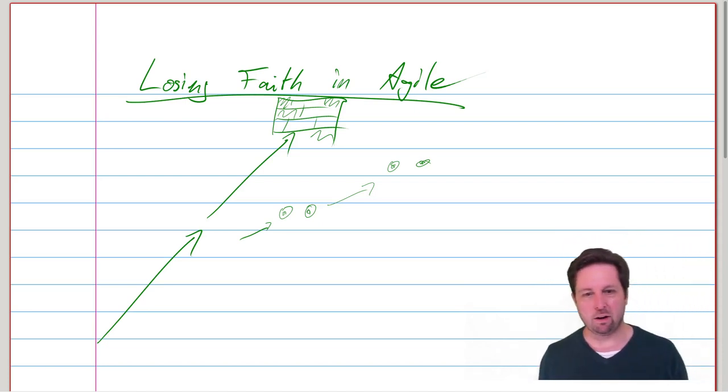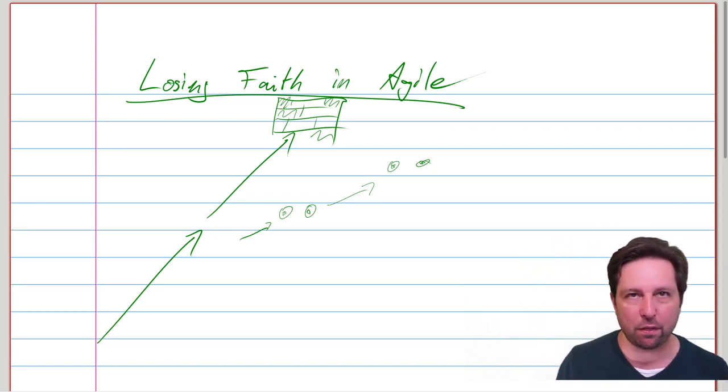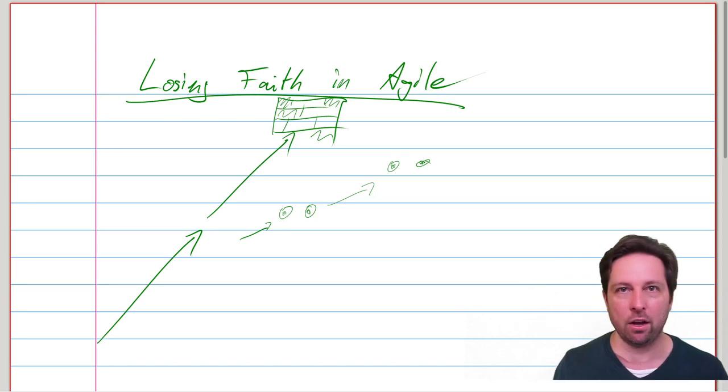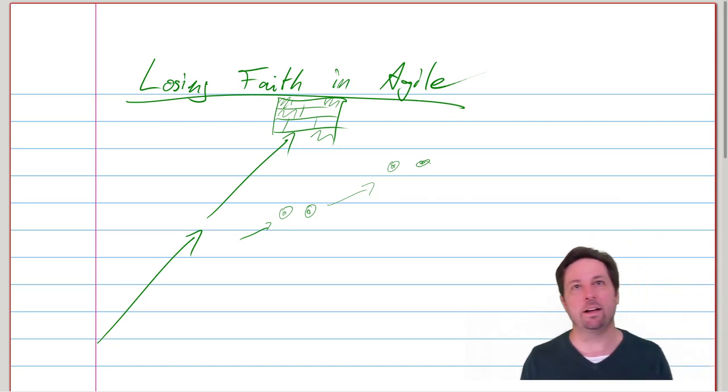But this is the hard thing about the Agile Manifesto, right? It's got 12 principles, but the difficult thing about the 12 principles are the 500 pages worth of implicit knowledge that's written down between the lines of the 12 principles.